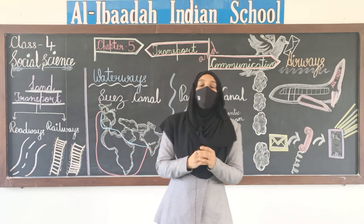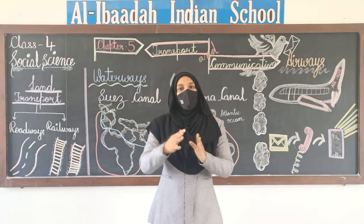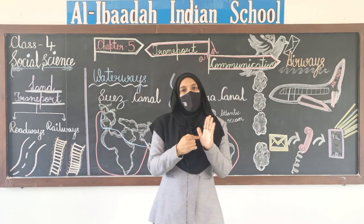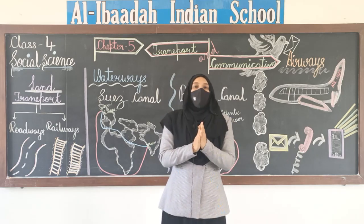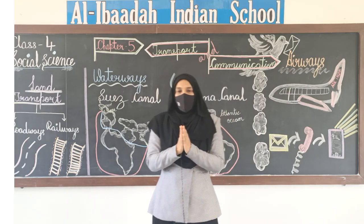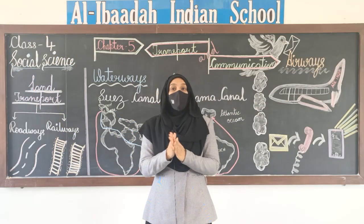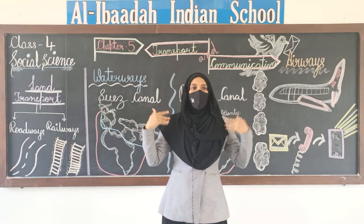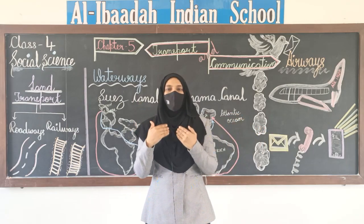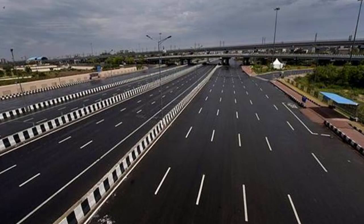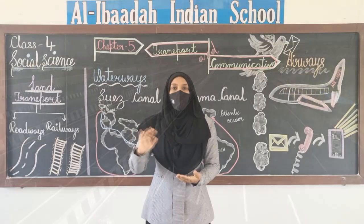Then we have state highways, looked after by the state government, which ensures all cities are connected. We also have the Golden Quadrilateral — a multi-lane expressway connecting four main cities: Mumbai, Chennai, Kolkata, and Delhi. It is six lanes wide and people can travel very fast on it. Six-lane and eight-lane roads are huge roadways, called freeways or expressways.